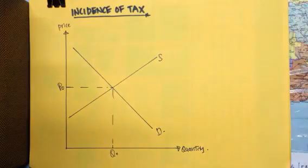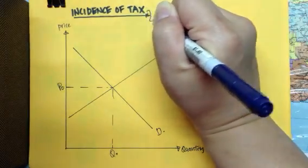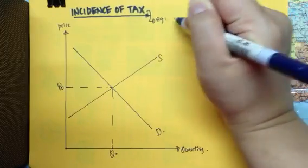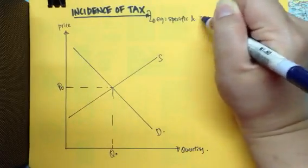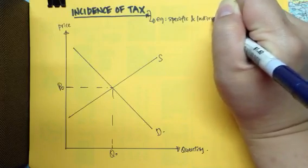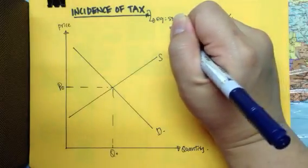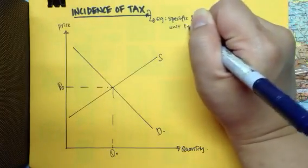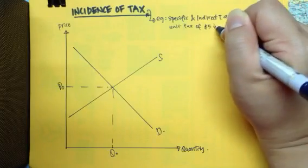So the market is at equilibrium. Next, let us assume that in this case, we have an example of a specific and indirect tax. So there is a unit tax imposed of, for example, $5 imposed.